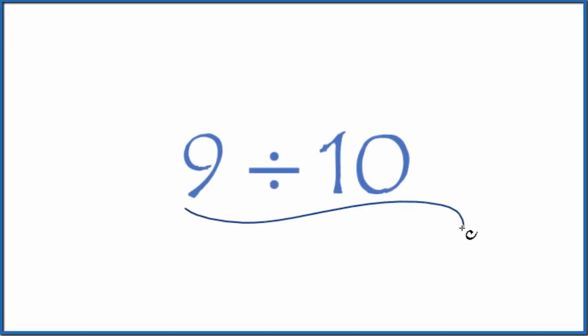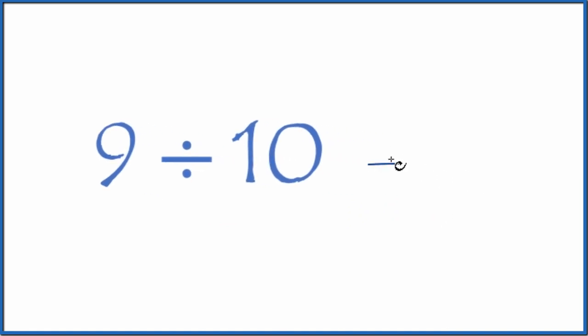Let's divide 9 by 10. So we can think about this as a fraction: 9 divided by 10, that's the same as 9 tenths. So we have our fraction. We could also take our calculator and divide 9 by 10.